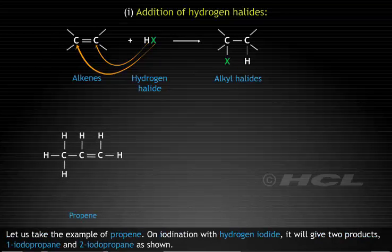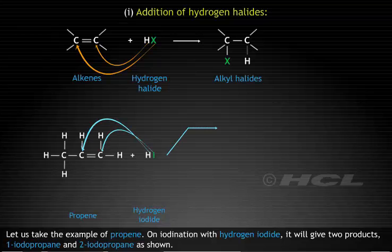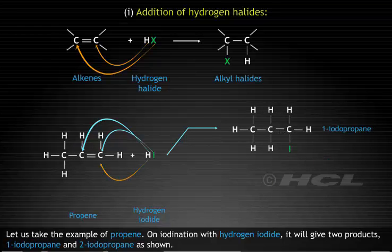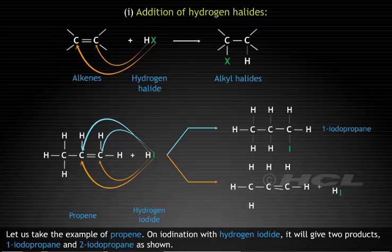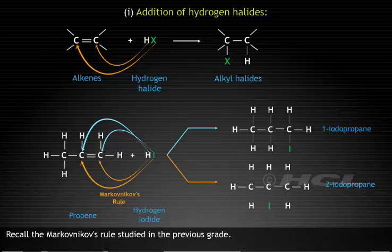Let us take the example of propene. With hydrogen iodide, it will give two products: 1-iodopropane and 2-iodopropane as shown. Recall the Markovnikov's rule studied in the previous grade.